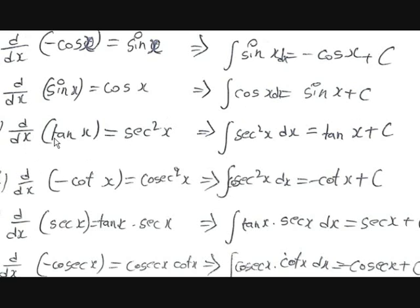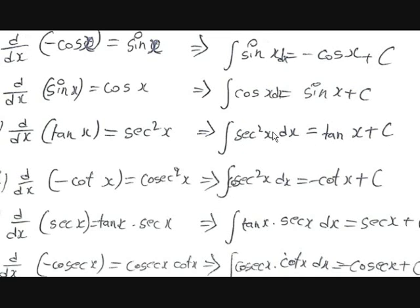We know that d/dx of tan x is equal to sec²x. You might think to take a square root on both sides to get √(tan x) = sec x, so the integral of sec x equals √(tan x) plus c — but you cannot take a square root on both sides of a derivative, because you would get √(d/dx of tan x), not d/dx of √(tan x). So d/dx of tan x = sec²x implies the integral of sec²x dx is equal to tan x plus c.